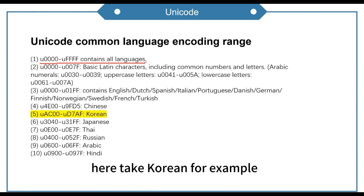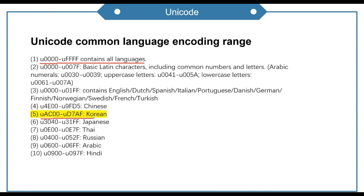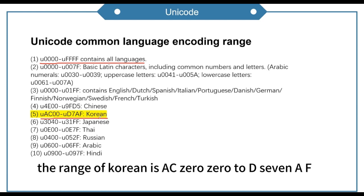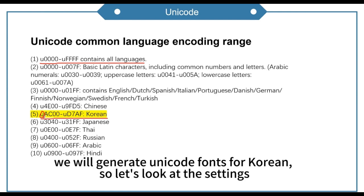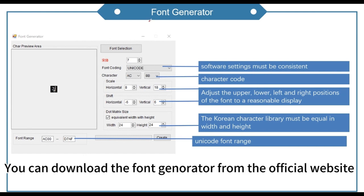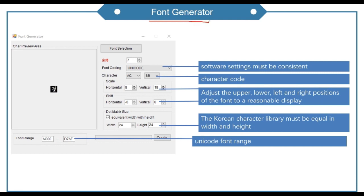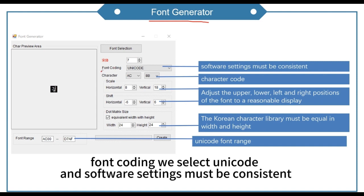Here we take Korean as an example. The range of Korean is AC00 to D7FF, where U stands for Unicode. We will generate Unicode fonts for Korean. You can download the font generator from the official website. Font coding should be set to Unicode, and the software settings must be consistent.